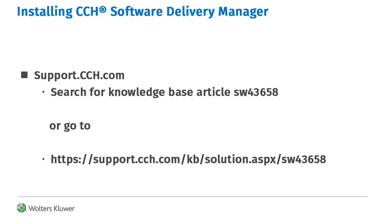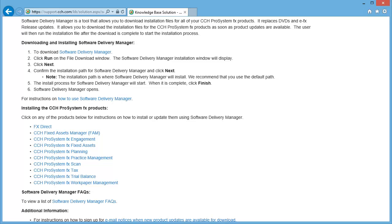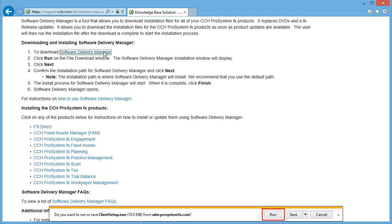To begin, open Microsoft Internet Explorer and go to support.cch.com and search for Article SW43658, or go to the URL shown on your screen. On step number one, select the link to download Software Delivery Manager. When prompted to run or save the file, click Run.